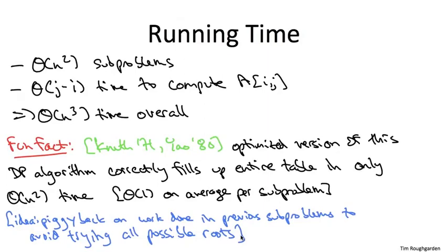In fact, on average, constant number of possible roots over all of the subproblems. And needless to say, this speeding up of the running time from cubic to quadratic really significantly increases the problem sizes that you can now apply this algorithm to. So now instead of being stuck in the hundreds, you'd certainly be able to solve problem sizes in the thousands, possibly even in the ten thousands using this quadratic time algorithm. Very cool.